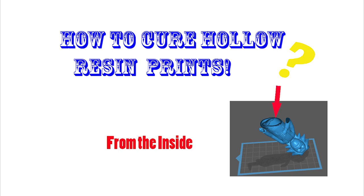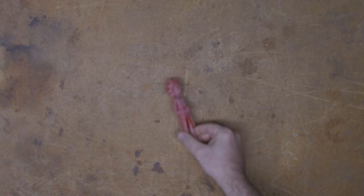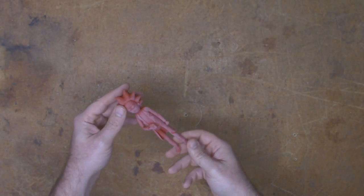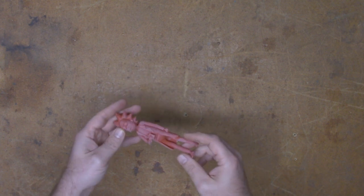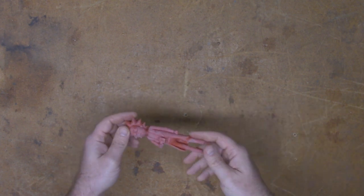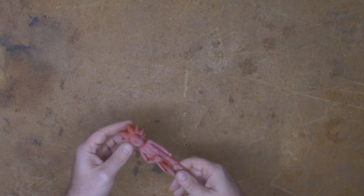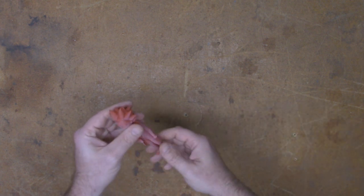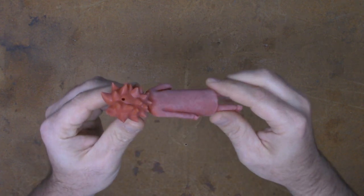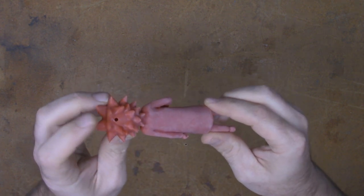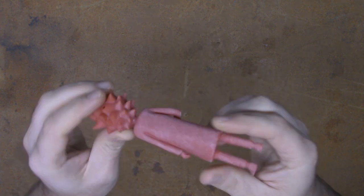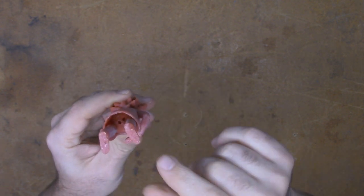Today on Fat Man Makes I want to discuss curing hollowed out resin prints. I have my Rick from Rick and Morty, he was printed at standard layer height and he is hollowed out. If you can see, we can get a focus here - I have an air hole here and I also have two air holes in the crotch area.